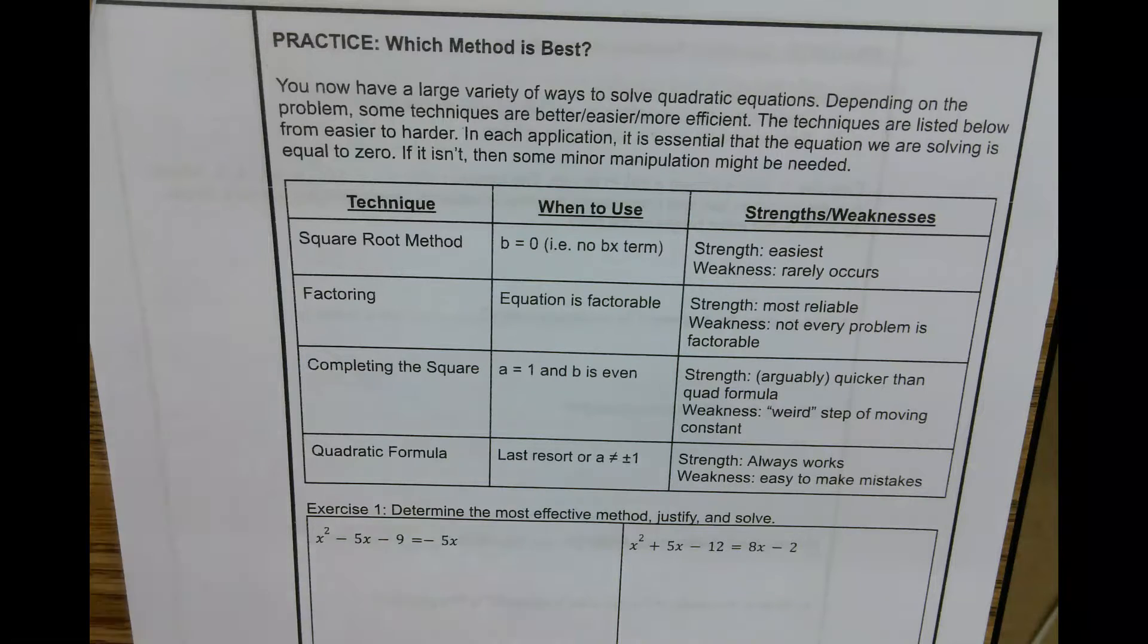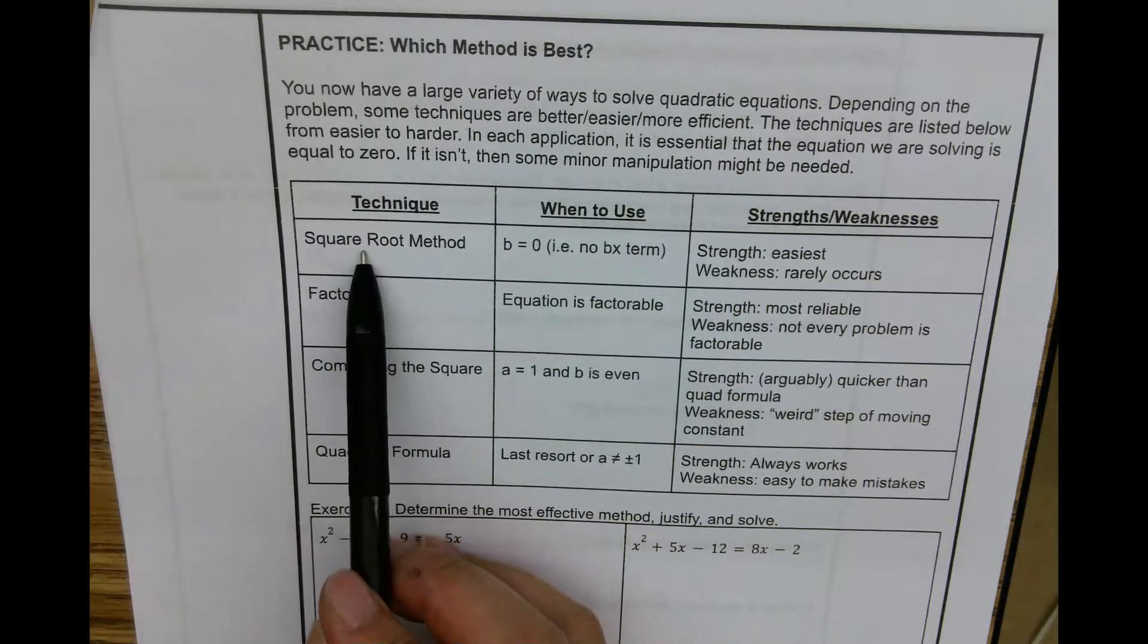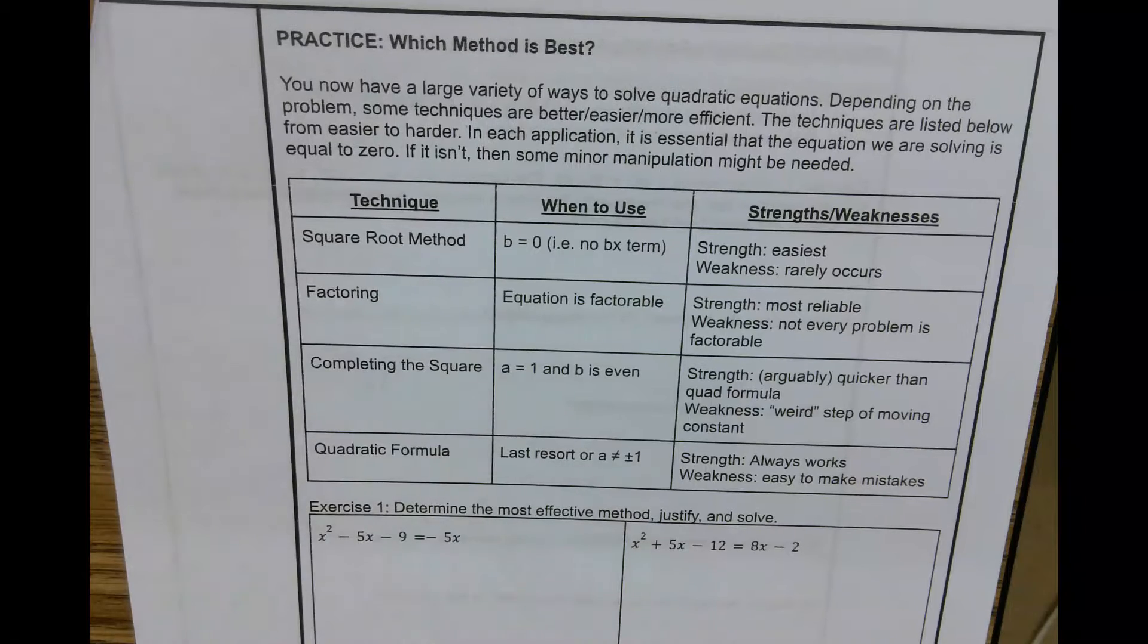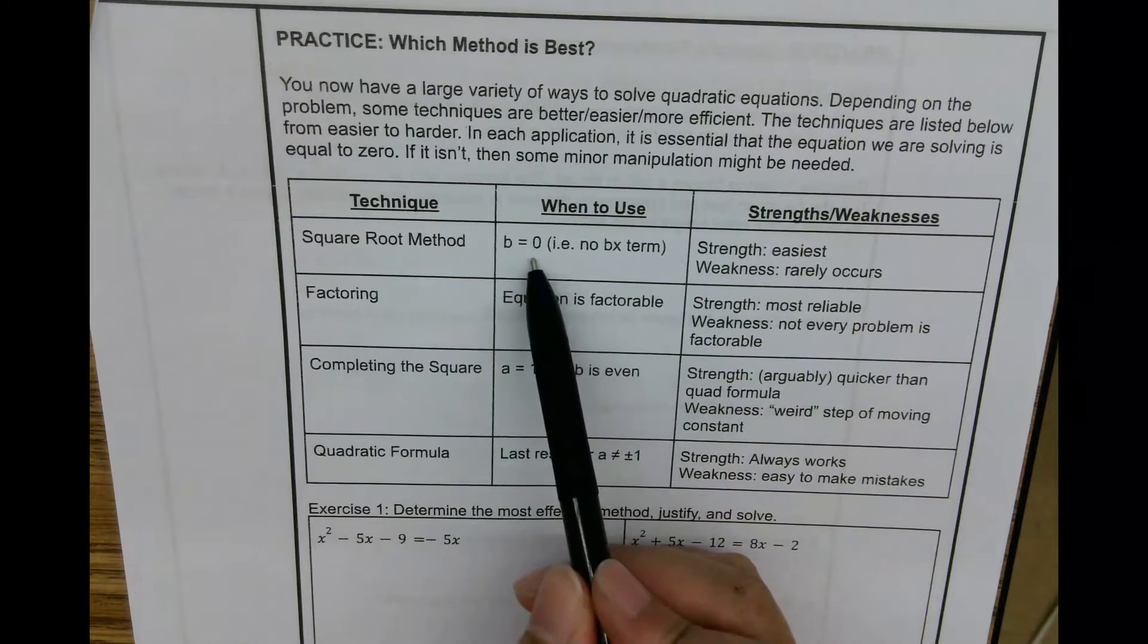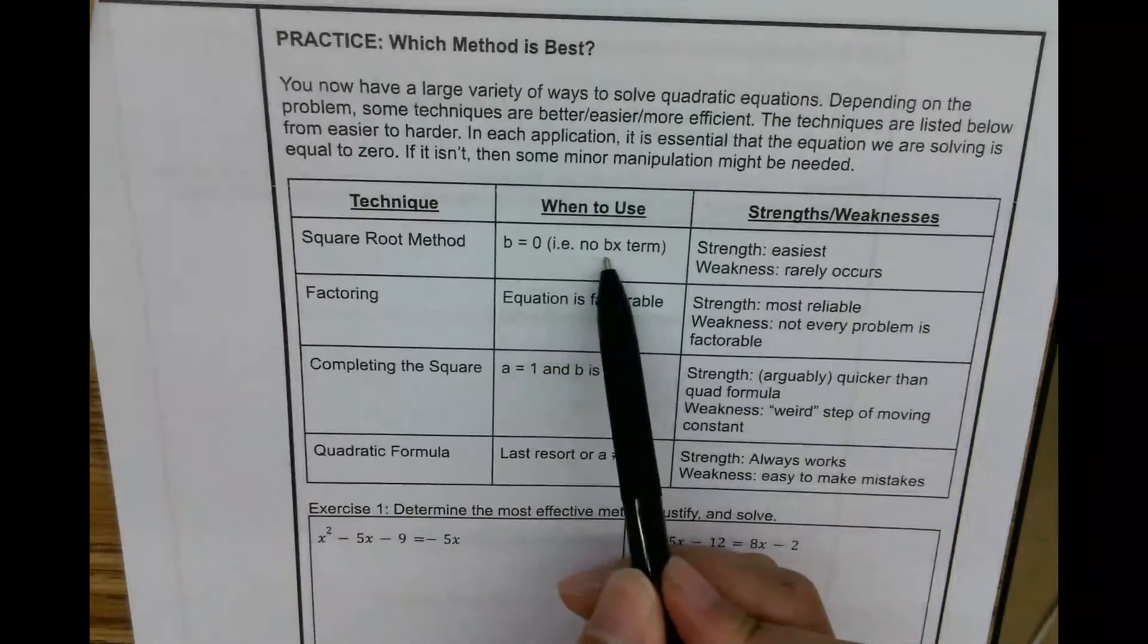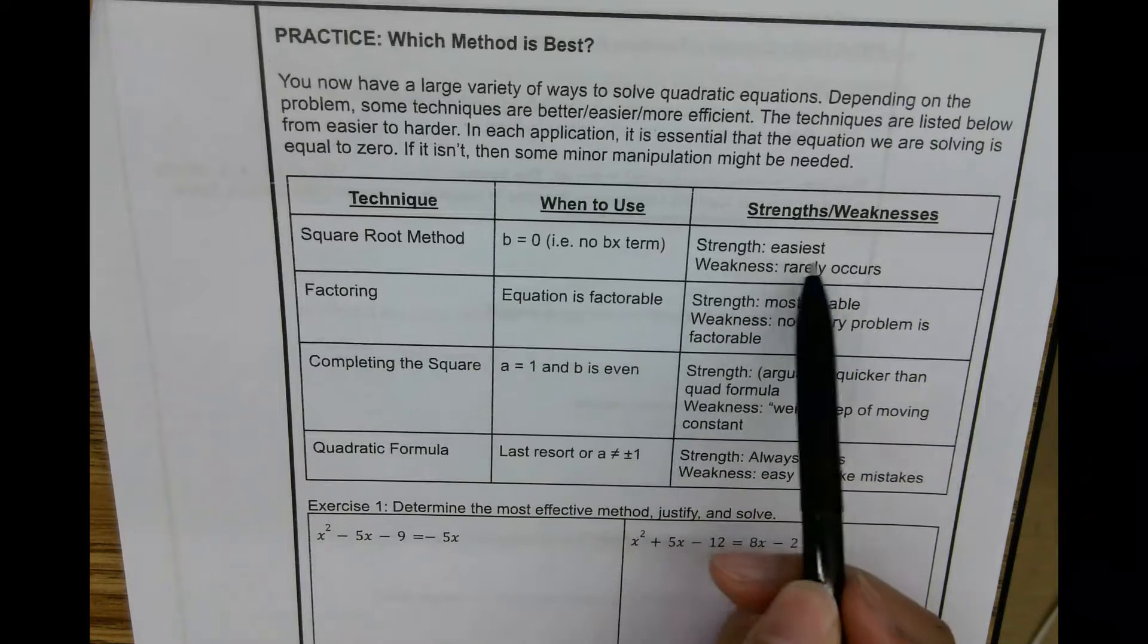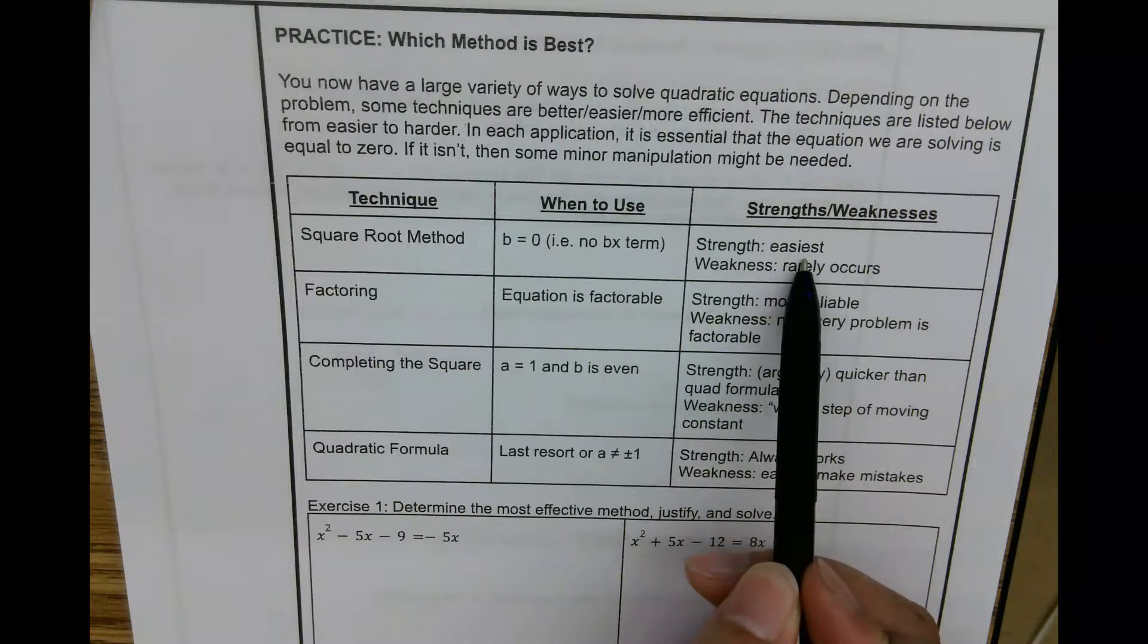So the first technique here is square root method. This is when we're just doing inverse operations to it. Here it talks about how b equals zero, or there is no bx term. The strength is it's the easiest, the weakness, it rarely occurs. It's something like if it was x squared equals 16. That rarely happens.